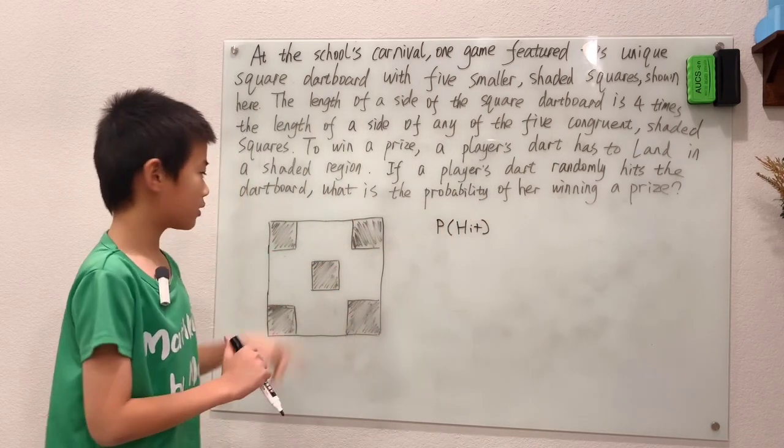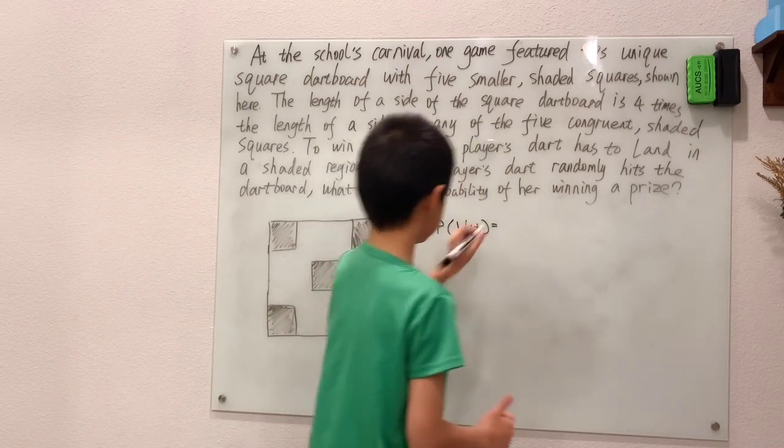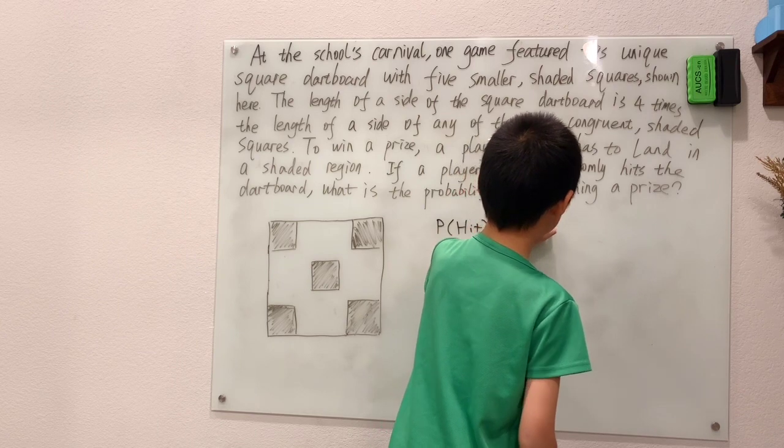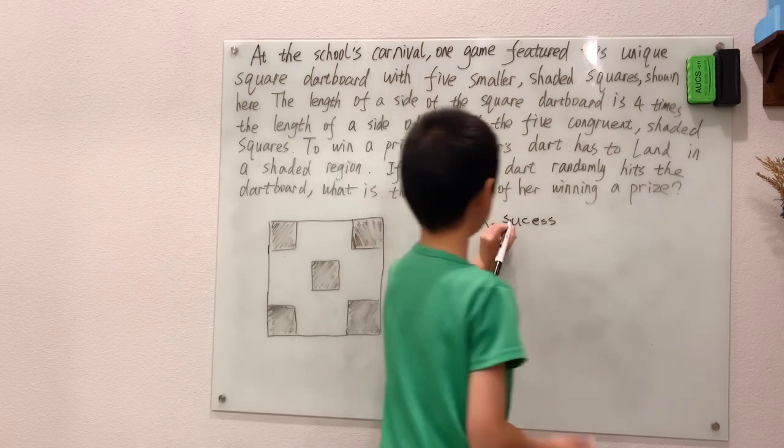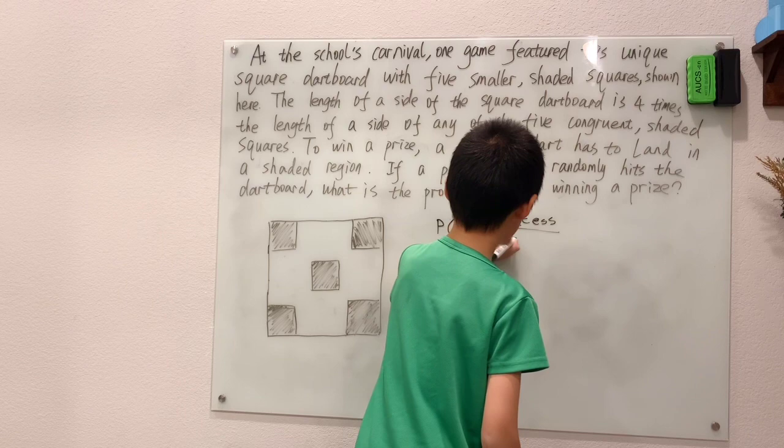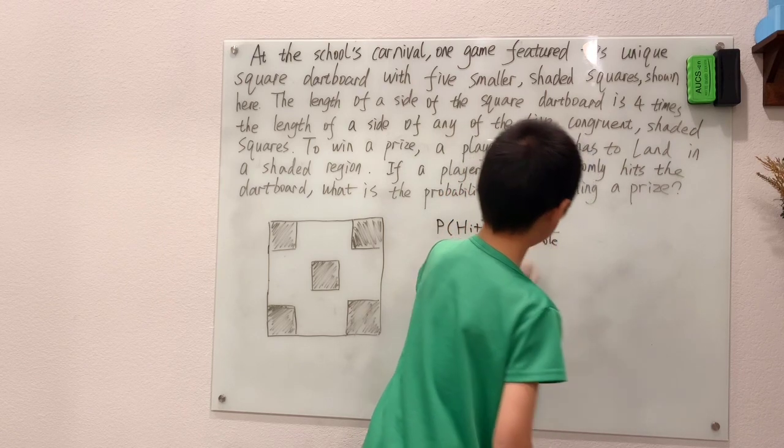Probability that the dart will hit one of the shaded regions. That's just the successful outcomes, which is the dart hits one of these squares, over the possible outcomes, which is just the number of points in this grid.